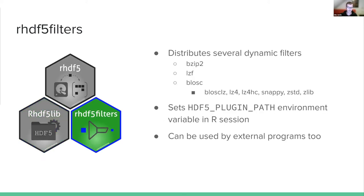To accompany that, there's also RHDF5filters, which distributes some of the dynamic compression plugins. In there there's bzip2, LZF, and BLOSC filters — the source code is distributed with it, it gets built on all platforms and is made available to users. It does this by setting the HDF5 plugin path environment variable within their R session. Once they load the package, these are available for reading and writing. You can also use the shared objects distributed with it in other programs outside of R.